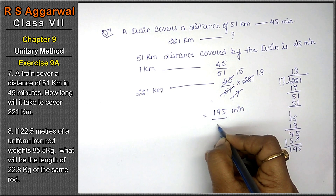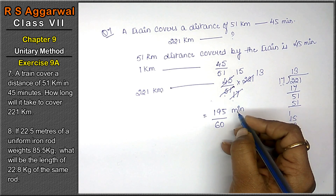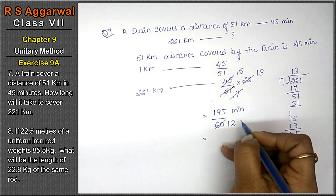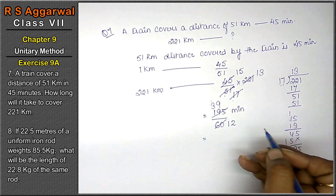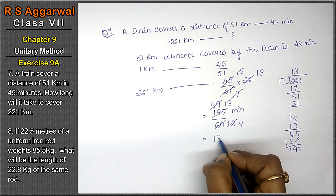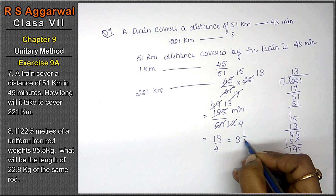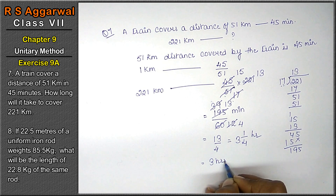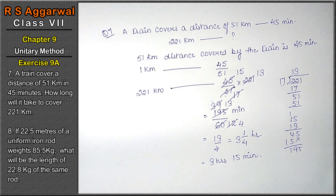Now we have to convert it into hours. So we will divide it by 60 to convert it into hours. 5 ones are 5, 5 twos are 10, 5 threes are 15, 5 nines are 45. 3 fours are 12, 3 ones are 3, 3 threes are 9. So the answer is 13 upon 4 hours. That means 3 hours and one-fourth of an hour, which means 15 minutes is the answer.